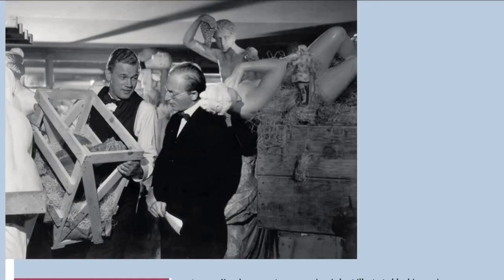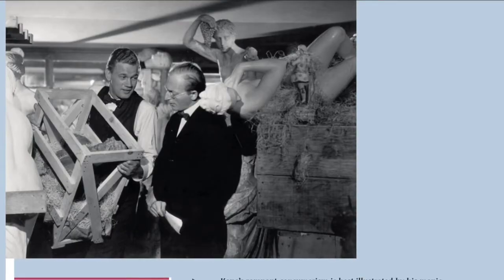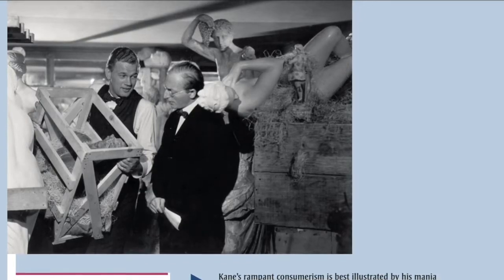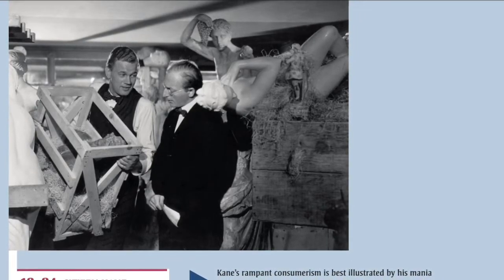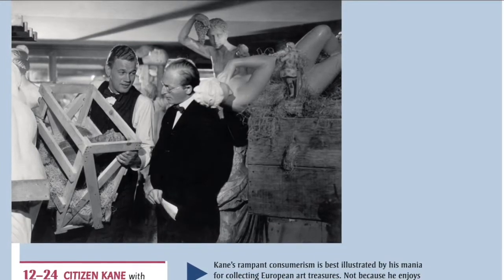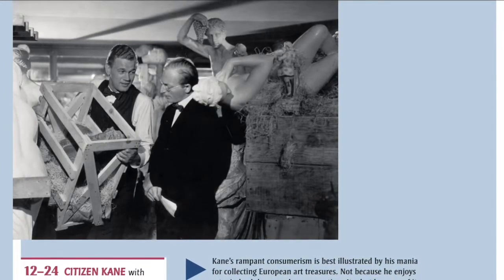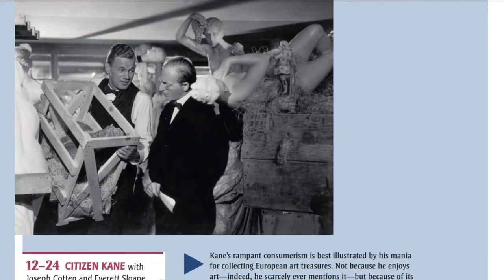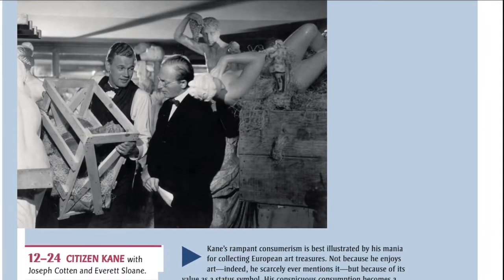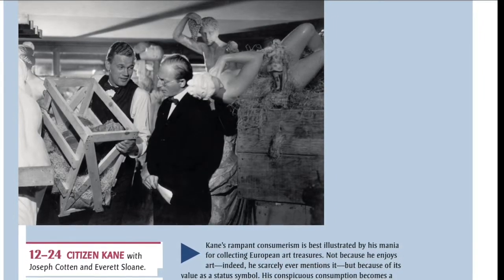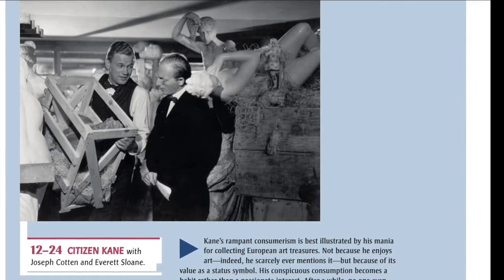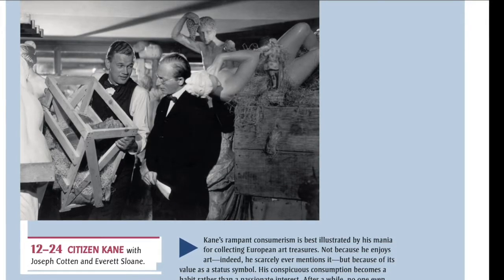12-24: Citizen Kane with Joseph Cotton and Everett Sloan. Kane's rampant consumerism is best illustrated by his mania for collecting European art treasures — not because he enjoys art (he scarcely ever mentions it), but because of its value as a status symbol. His conspicuous consumption becomes a habit rather than a passionate interest. After a while, no one even bothers to uncrate his purchases; they're simply stored away with all his other possessions.